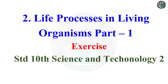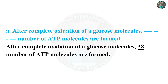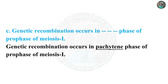First, fill in the blanks and explain the statements. A. After complete oxidation of glucose molecules, blank number of ATP molecules are formed. B. At the end of glycolysis, blank molecules are obtained — pyruvic acid, ATP, NADH2 and water molecules are obtained. C. Genetic recombination occurs in blank phase of prophase of meiosis 1. The answer is Pachytene.